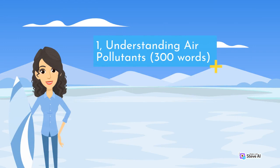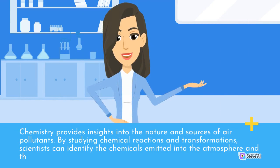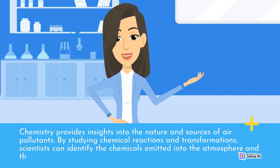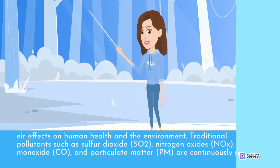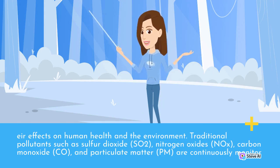Understanding Air Pollutants. Chemistry provides insights into the nature and sources of air pollutants. By studying chemical reactions and transformations, scientists can identify the chemicals emitted into the atmosphere and their effects on human health and the environment. Traditional pollutants such as sulfur dioxide (SO2), nitrogen oxides (NOx), carbon monoxide (CO), and particulate matter (PM) are continuously monitored to assess air quality.